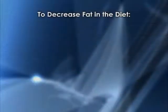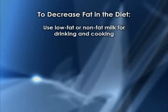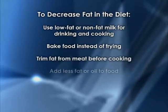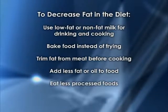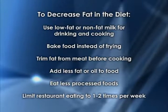A heart-healthy diet is rich in fruits and vegetables, whole grains, fish, nuts, and lean meats. Red meat should be no more than twice a week, even if it's lean. The leaner cuts of red meat include rump roast, round, loin, and sirloin — if it has the word loin or sirloin, it's generally leaner, as opposed to chuck, T-bone, ribs, or sausage, which are fattier. To decrease fat in the diet: use low-fat or nonfat milk, bake instead of frying, trim fat from meat before cooking, add less fat or oil, eat less processed foods, and limit restaurant eating to one to two times per week.